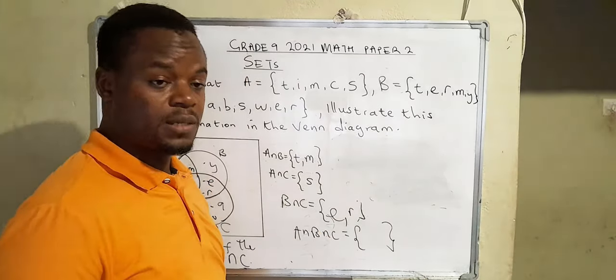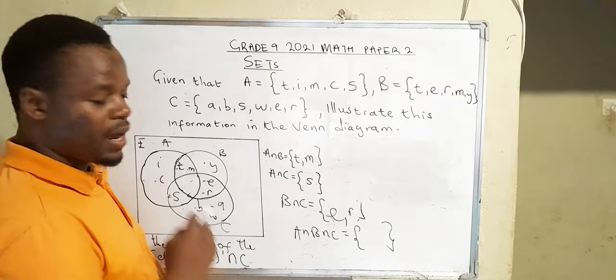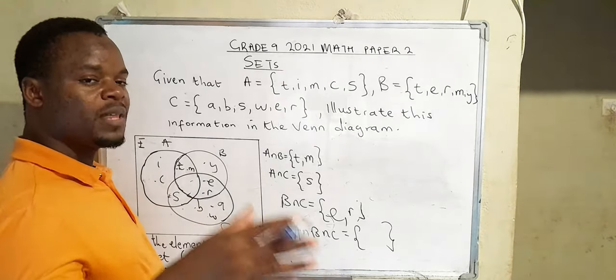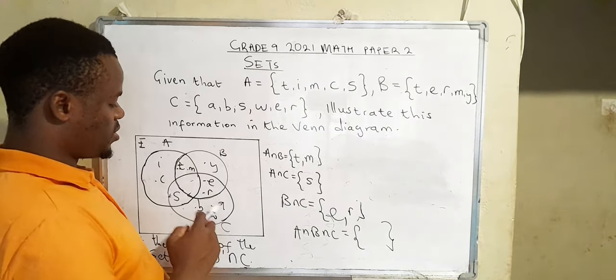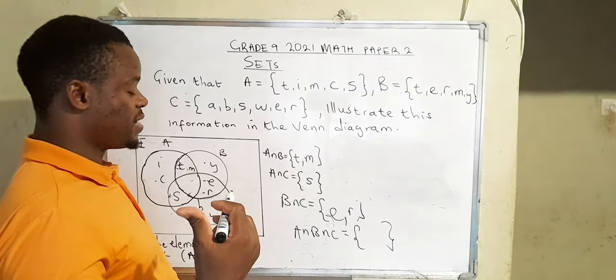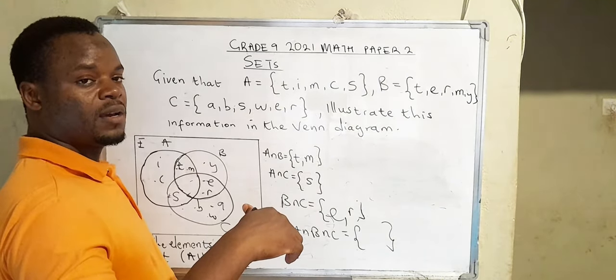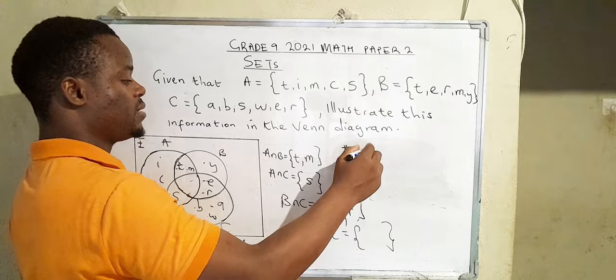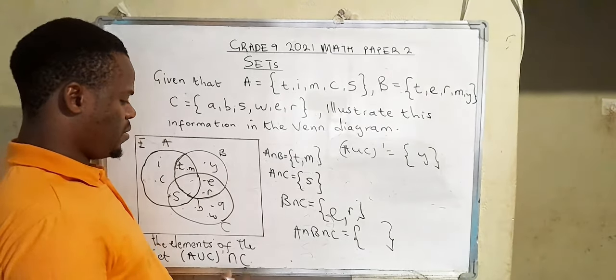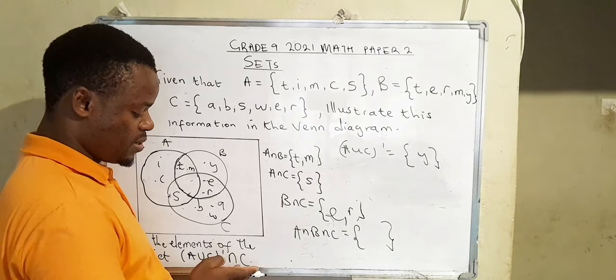You first of all have to list A∪C. So set A is this one. So all the elements in set A and set C are these which are actually covered there. So when they say find the complement of A∪C, then you're looking for the elements which are not found in A∪C. So it's Y. So (A∪C)' is equal to {Y}.